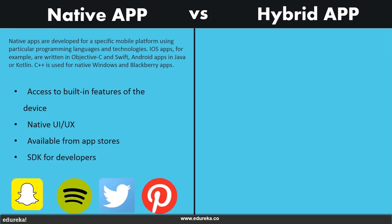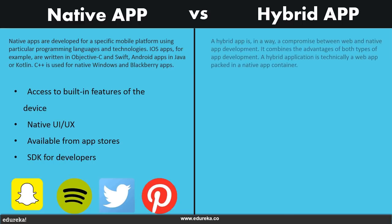Moving on to hybrid apps — a hybrid app is in a way a compromise between a web and a native app development. It combines the advantages of both types of app development. A hybrid application is technically a web app packed in a native app container. Like the web app, it is written in HTML, CSS, and JavaScript. Unlike the web app, it is distributed through the app store or over the air for iOS devices. Another difference is that the hybrid app is reliant on the web view and not the mobile browser. Hybrid apps are good for banks, news media, and content delivery platforms.